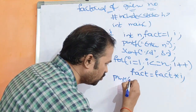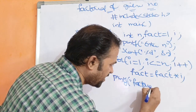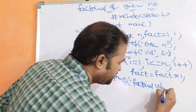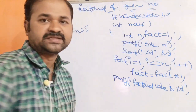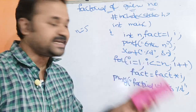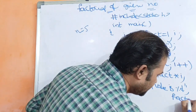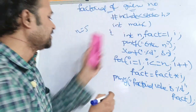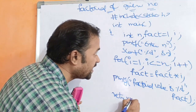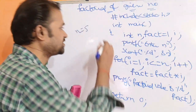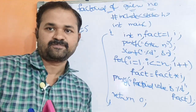Tharavatha printf statement - 'factorial value is' - percentage d tho, comma fat. Return 0 cheppithe complete avuthundi. Ippo manu program yokka tracing chodhamu. Let n value is 5 - fact lo yandara value 120 raavali, so logic correct o kaadho check chesthamu.